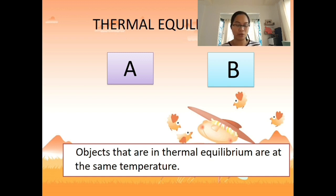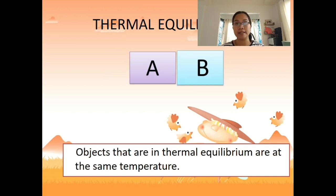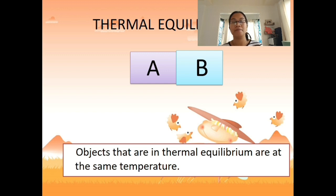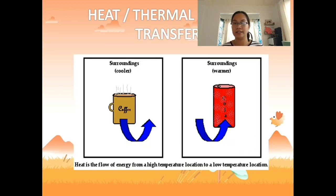What is thermal equilibrium? If body A and body B are at different temperatures and are placed in contact with each other, at some point they will reach thermal equilibrium — meaning they will reach the same temperature. If B is colder than A, then A releases heat which is absorbed by B until their temperatures equalize.